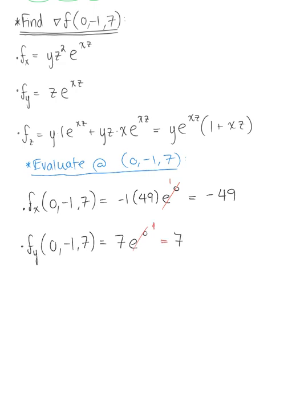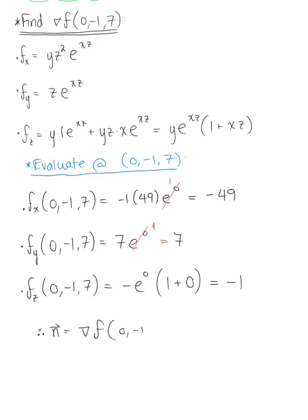The partial derivative with respect to z at (0, minus 1, 7) leaves us with minus the natural exponential raised to 0, times 1 plus 0, which gives us minus 1. Therefore our normal vector, defined by the gradient at the point (0, negative 1, 7), has components minus 49, 7, minus 1.